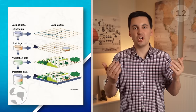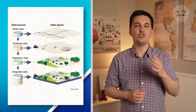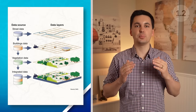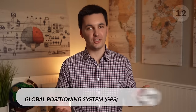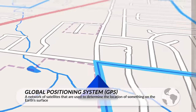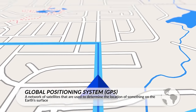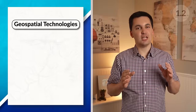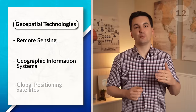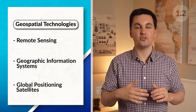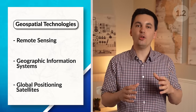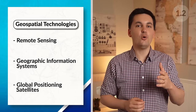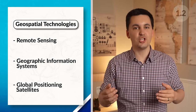GIS creates layered maps, which give geographers insight into the spatial associations and patterns of a place. Satellites are also helpful at providing absolute location through the global positioning system, or GPS. Today, people use GPS to help navigate between different places or to find specific spots on the earth's surface. These three technologies — remote sensing, GIS, and GPS — are all known as geospatial technologies, and they allow businesses, people, governments, and organizations to locate places and visualize geographic data.